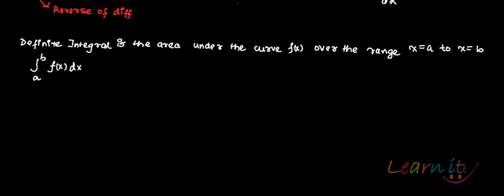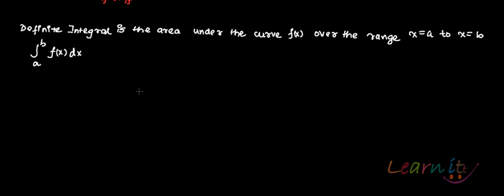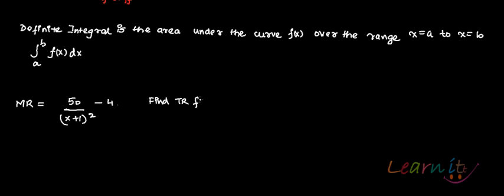The first application is how to calculate the TR function from the MR function, and also how to find the demand function. Suppose the marginal revenue function MR is given as 50 / (x+1)² − 4. The first question is to find the TR function and the demand function. To find the total revenue function, you will integrate the MR function.